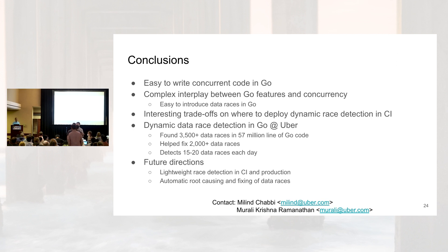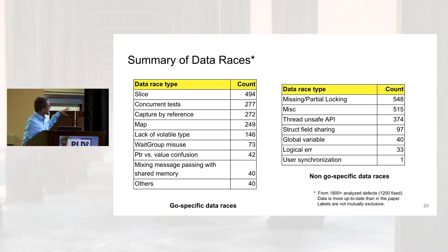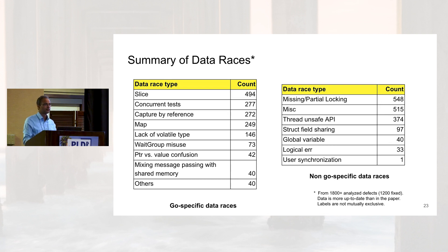Q: It seems like Go has built-in foot guns for data races — several language features make it much easier to write data races. Are there any ideas at Uber or elsewhere about how to fix some of these individual problems? A: Yes, there are a lot of patterns. For the most common ones, I would say about 20-25% fall into a category where it is relatively easy to fix automatically. I can have a follow-up discussion if you're interested.